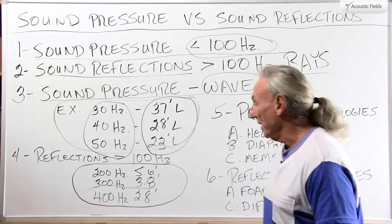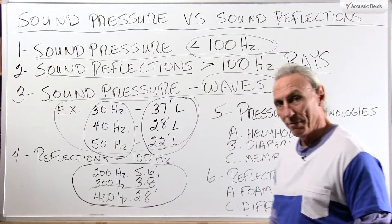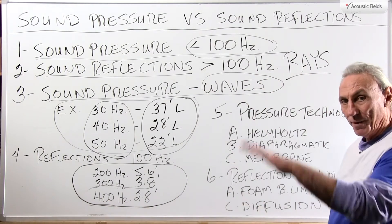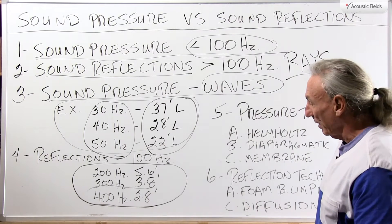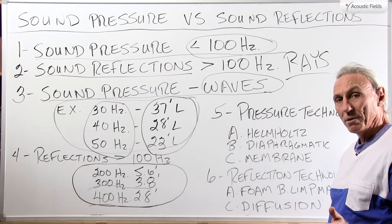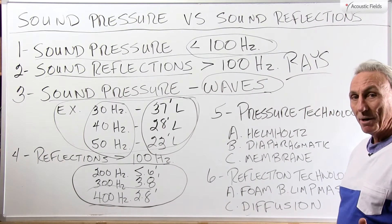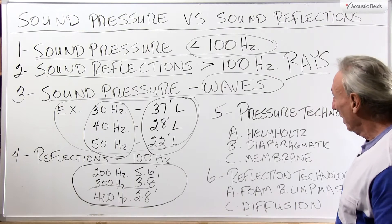300 cycles is 3.8 feet, 400 cycles is 2.8 feet. And as we go up, they get smaller. So a thousand hertz is about a foot long. So how do we treat those?